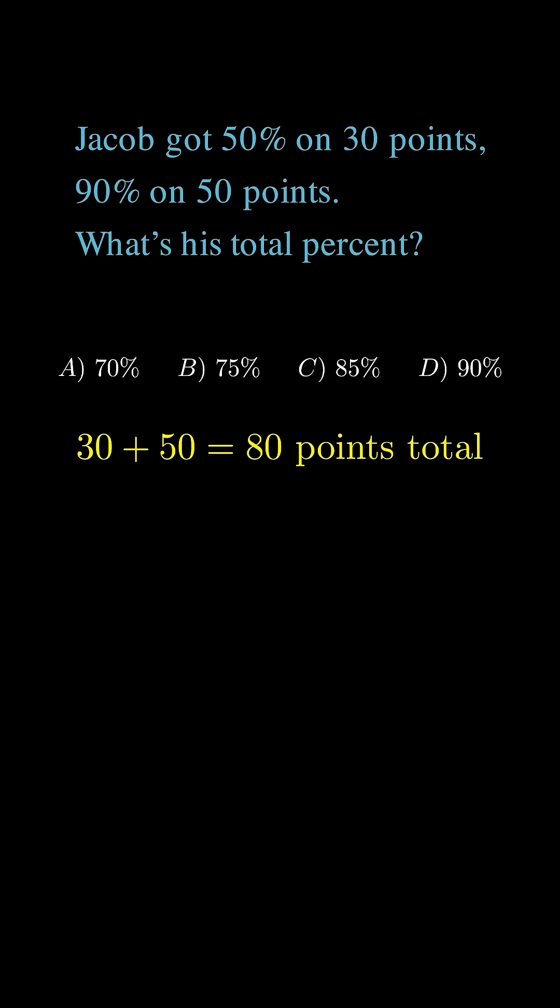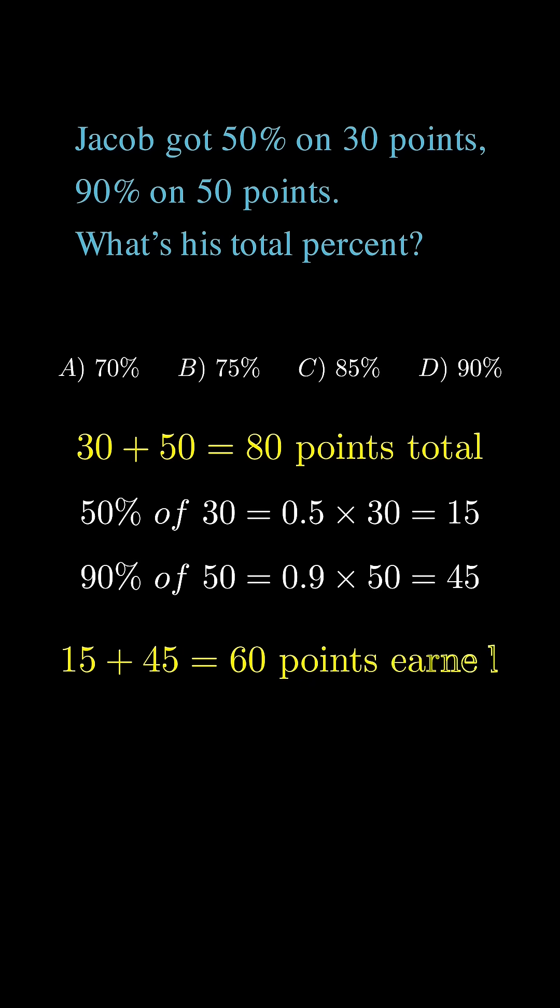Jacob earned 15 plus 45 equals 60 points out of a total of 80 possible points. 60 divided by 80 equals 0.75 or 75%. So,